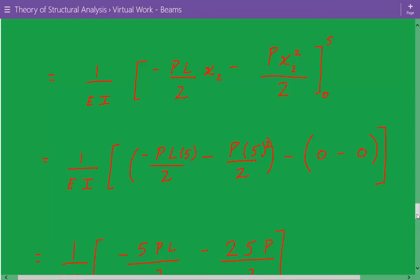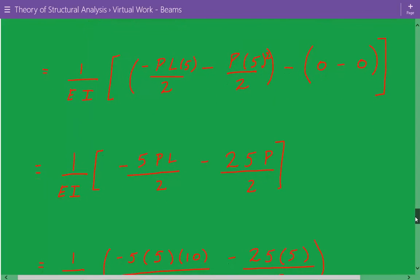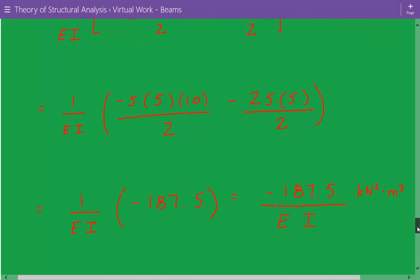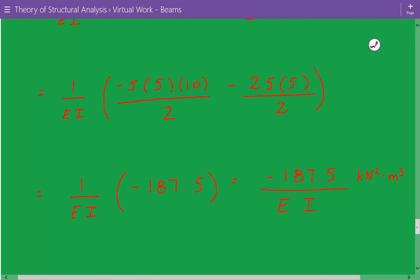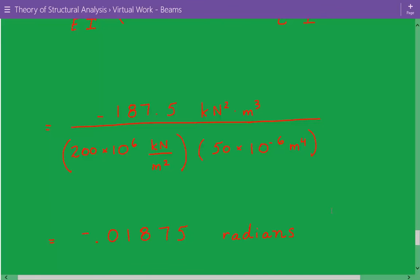We just integrate and we plug in the limits. And we get that 1 over EI times negative 5 P L over 2 minus 25 P divided by 2. And then we plug in the numbers for the load, for load P and the length L. And we get the slope is equal to negative 187.5 kilonewton squared meters cubed divided by EI. And now we can actually plug in the values for the Young's modulus and the moment of inertia. And then we get that the slope at the location is equal to negative 0.01875 radians.